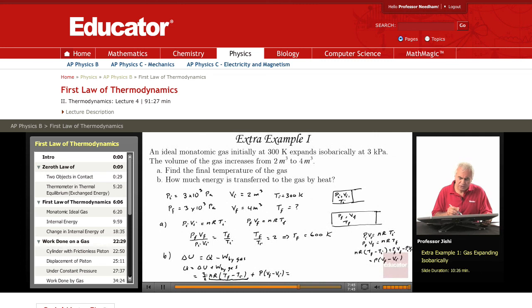So I get 3 over 2 P times VF minus VI, plus P times VF minus VI, which is 5 over 2 P times VF minus VI.